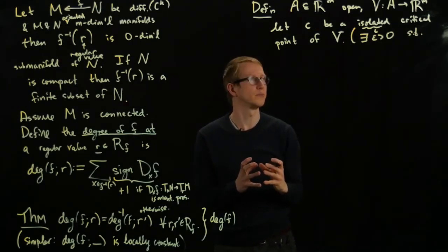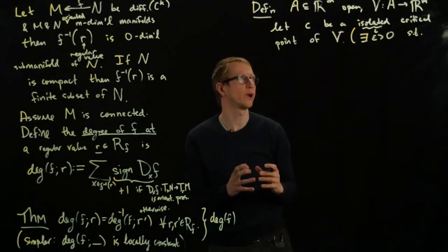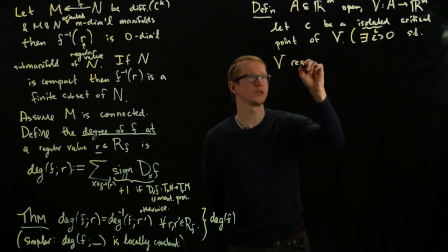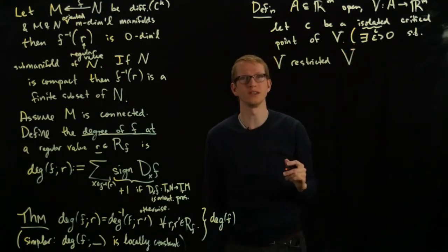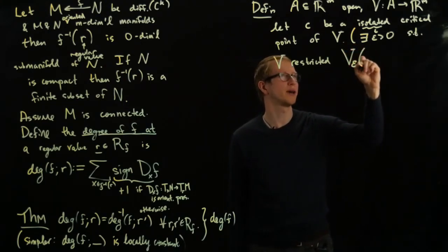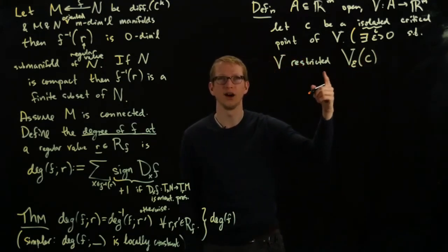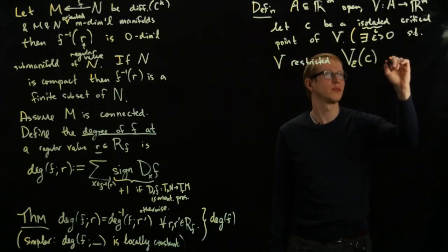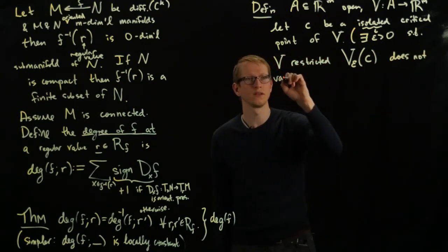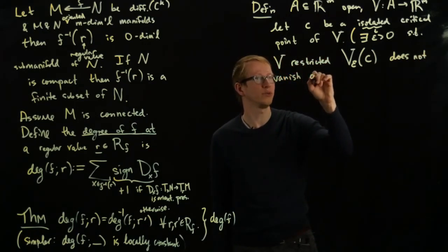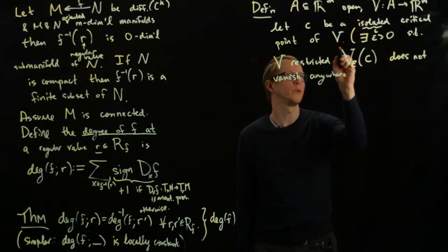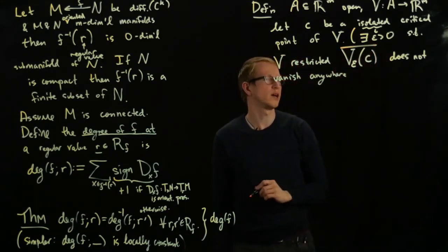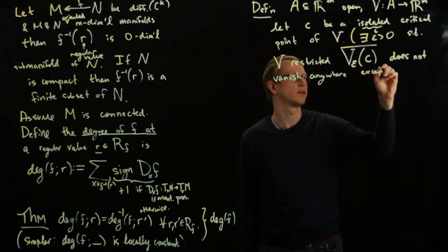I mean that there exists some epsilon greater than 0 such that if I take my vector field V and restrict it to this open neighborhood of radius epsilon around C, such that V, and let's even say the closed unit ball, so let's take the closure of this, does not vanish anywhere except at C.